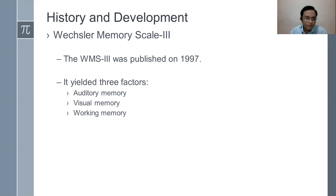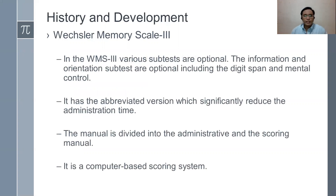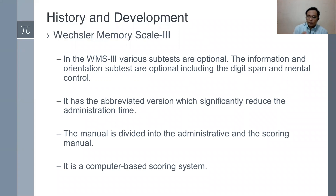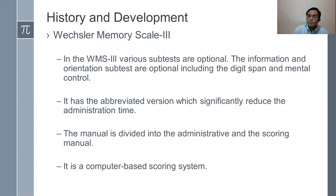WMS 3 was published in 1997. It has three factors: auditory memory, visual memory, and working memory. Various subtests are optional — the information and orientation subtests are optional, including digit span and mental control. Compared to the revised version where all subtests were required, WMS 3 introduced optional subtests. It has an abbreviated version which significantly reduced administration time, and the manual is divided into an administrative manual and a scoring manual.